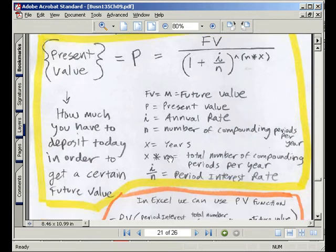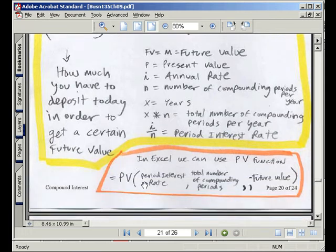Here are our variables. The way to think of this is present value. How much do you have to deposit today in order to get a certain amount in the future? Luckily, in Excel, there is a function, PV for present value. It needs to know the period interest rate, total number of compounding periods, and the future value. Let's go over to Excel.